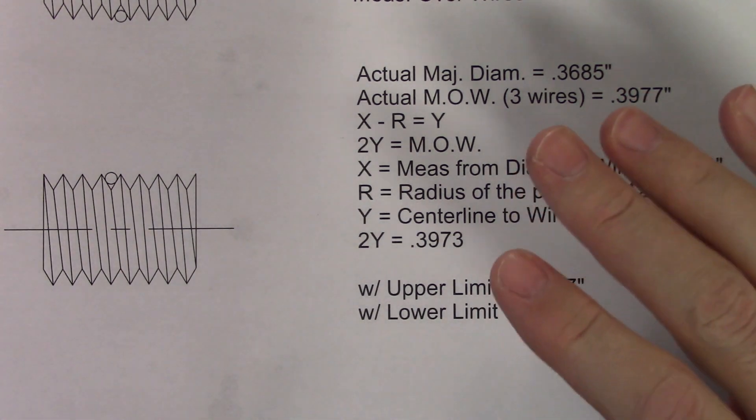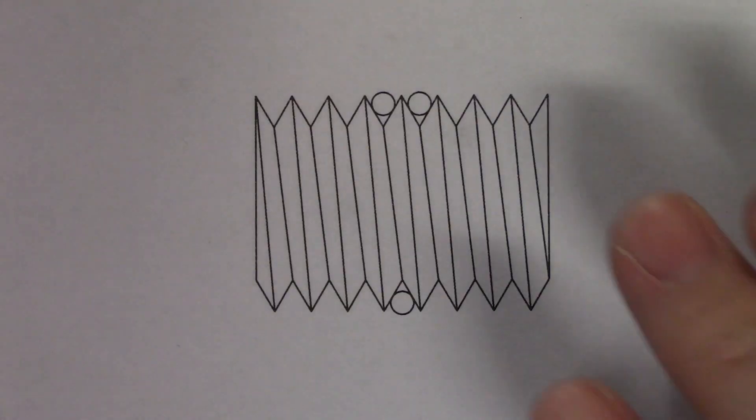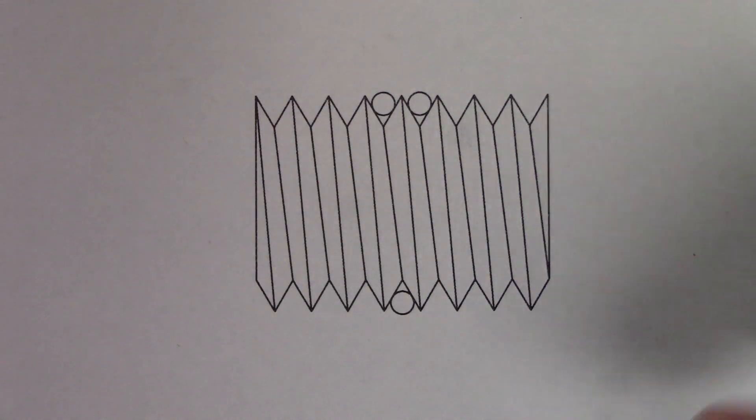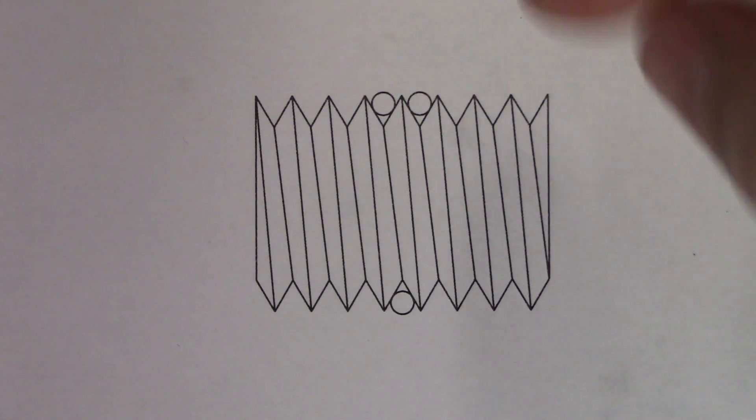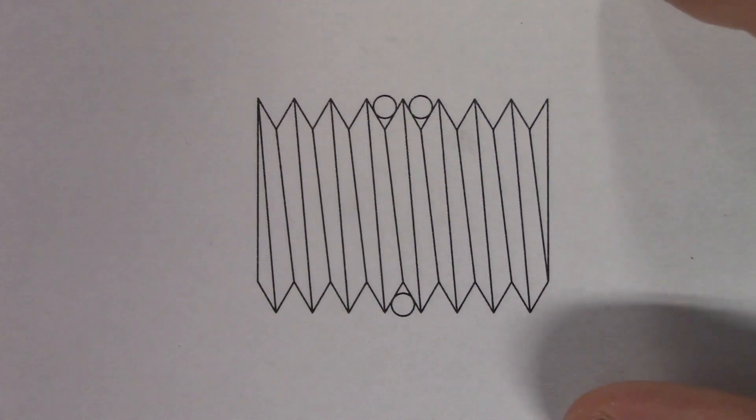Likewise, burrs are plentiful when threading, and failure to remove them each and every time you measure will change the result. Using the three-wire method, your measurement is independent of both of those variables because the wires sit in the V of the thread, and the diameter of the part and any burrs on it are irrelevant to that measurement.